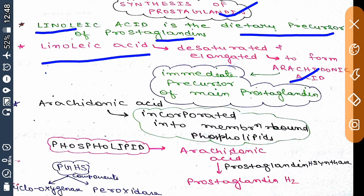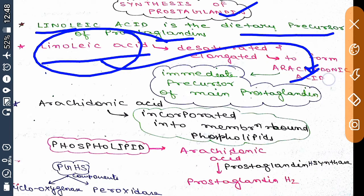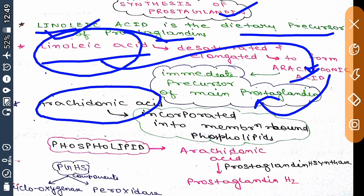Arachidonic acid is the immediate precursor of prostaglandin. Prostaglandin is formed from linoleic acid, which converts to arachidonic acid. We take linoleic acid in our diet, and this arachidonic acid is incorporated into membrane-bound phospholipid.